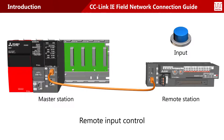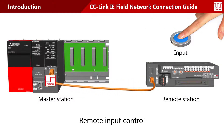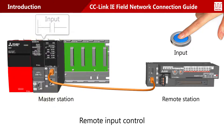As an example of remote input control, when the switch is pressed, the state change is sent over the network, and the sequential circuit contact turns on.